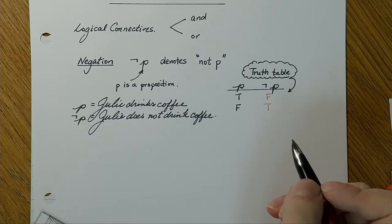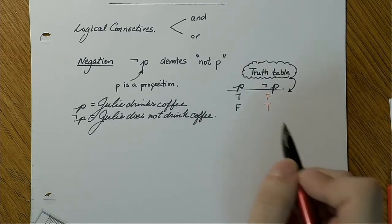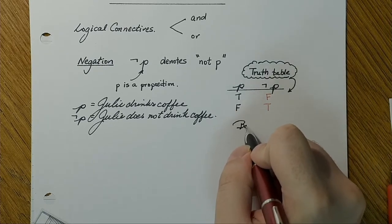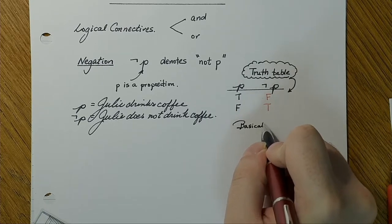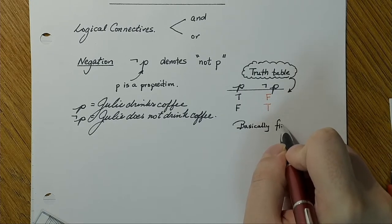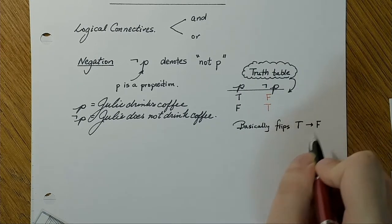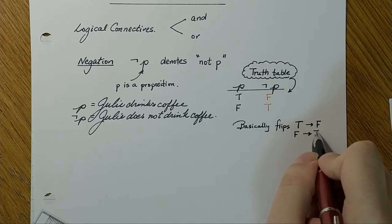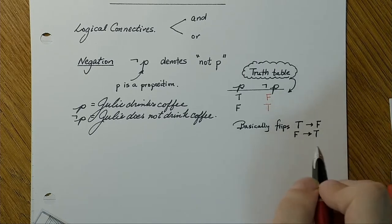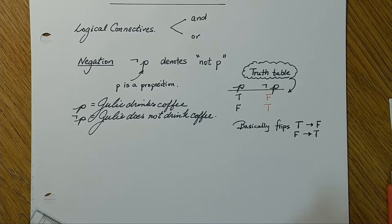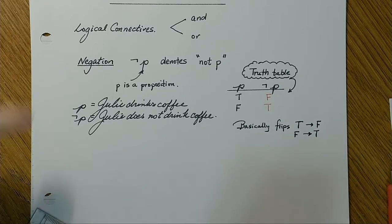Is everyone okay with the negation? All it does is flip true to false and false to true. There are no exceptions — when we write a truth table like this, it's exhaustive. The next thing we can do is what's called the conjunction.